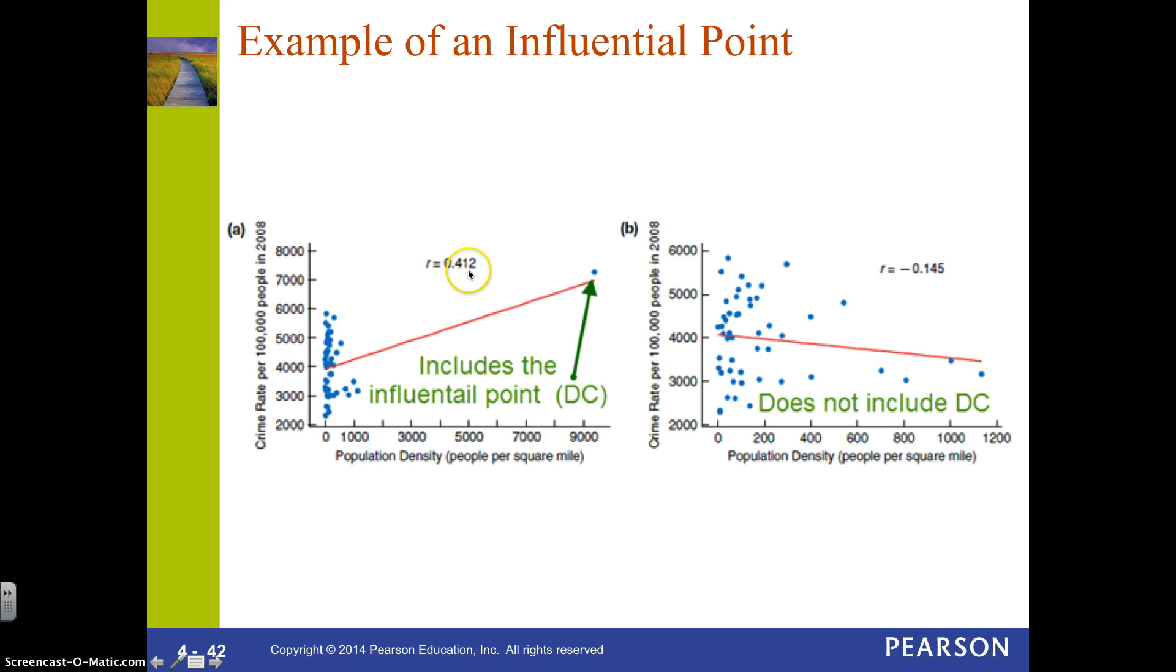By the way, I'm not saying that this 0.412 is a high correlation. I'm just saying you could have a graph of the high correlation, but it might just because one point is making it that high.